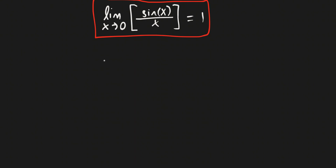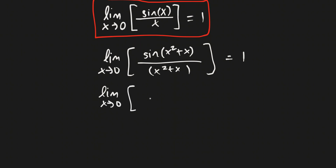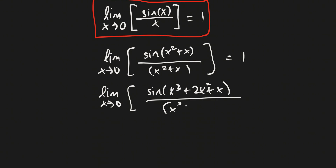The limit as x approaches 0 of sine of something over that same something is equal to 1, whenever each term of that expression has x in it. So we can broaden this a lot more. For example, if we had something like x squared plus x, this would still be true. So the limit as x approaches 0 of sine of x cubed plus 2x squared plus x over x cubed plus 2x squared plus x — this is also equal to 1.